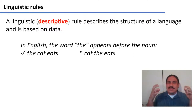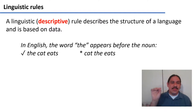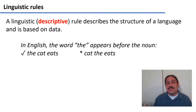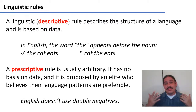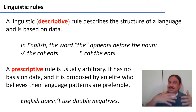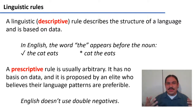These prescriptive rules are different from the kind of rules we studied in the previous videos. A linguistic or descriptive rule tells you the structure of a language. For example, a descriptive rule for English would be that 'the' appears before a noun — 'the cat eats' — and that you cannot have structures like 'cat the eats.' This would be a wrong English sentence because other people would not understand it. Contrast this with a prescriptive rule, which is not about whether a sentence can be understood. It's usually a somewhat arbitrary rule proposed by an elite who believes their language is better — such as 'English doesn't use double negatives.' The truth is, if you use a sentence with double negatives, everyone will understand it. It will not affect the way you are understood, and it's not the same as a descriptive rule.